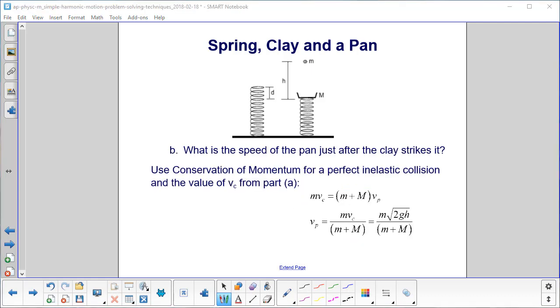What is the speed of the pan just after the clay strikes it? Now you just use conservation of momentum. You have a perfect inelastic collision. So you say mv of the clay is equal to the total mass of the system, which is the clay and the pan, times the velocity of the pan.